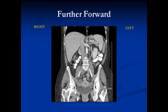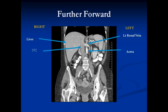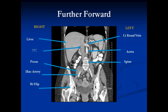Coming even further forward, we see other vascular structures while still seeing the retroperitoneum centrally. The liver and inferior vena cava are visible — the inferior vena cava courses through the liver as it goes up towards the heart. This structure coming across the aorta is the left renal vein. There's the aorta and the psoas muscles. Sitting on top of the psoas muscle is a white structure — these are the iliac arteries, one on each side. This is the right hip and the spine.